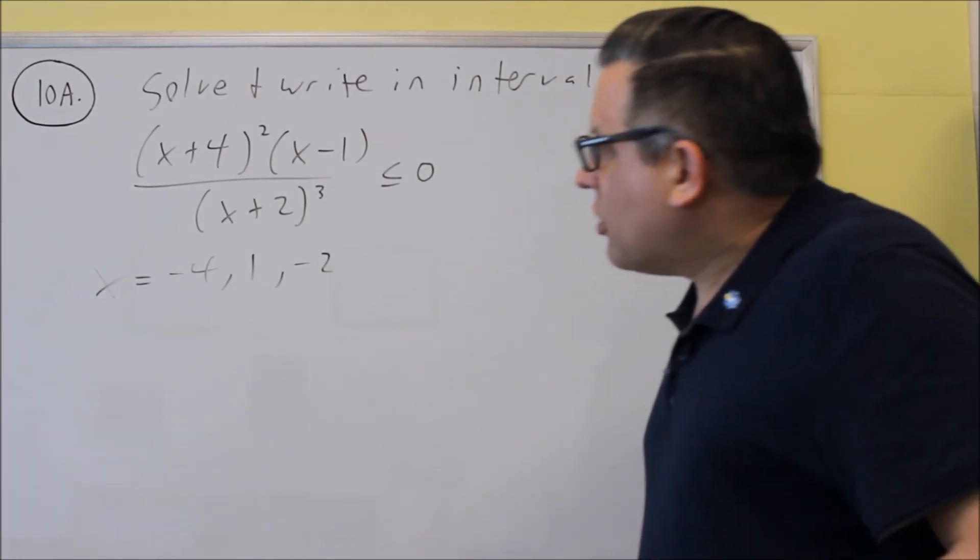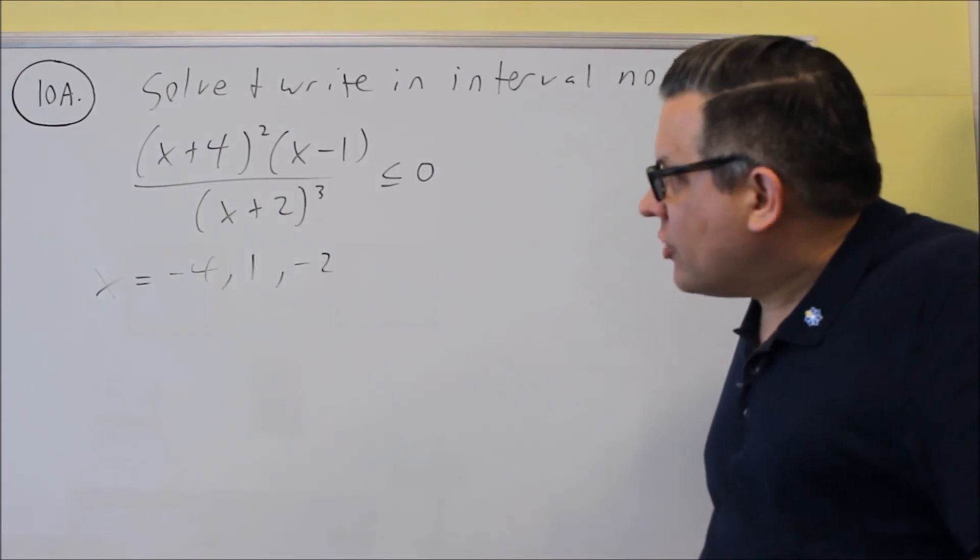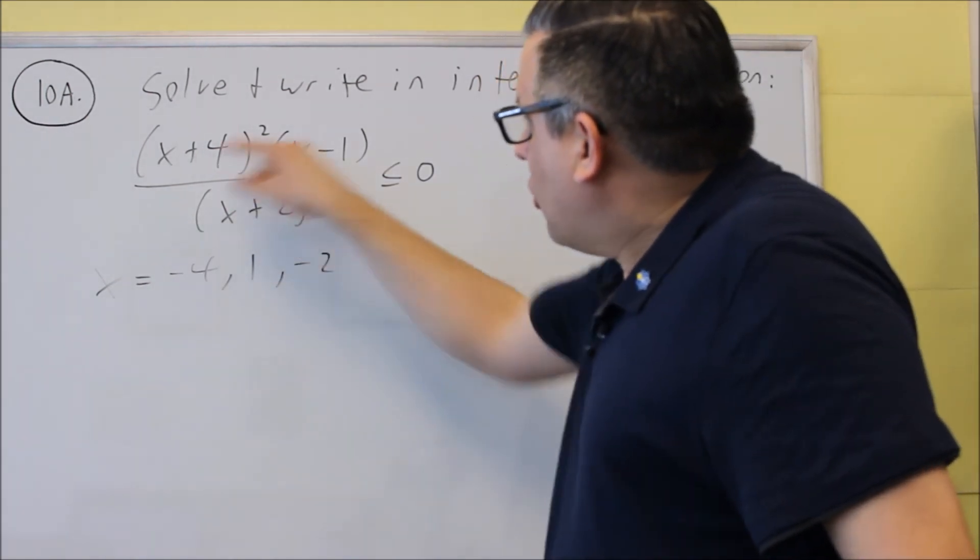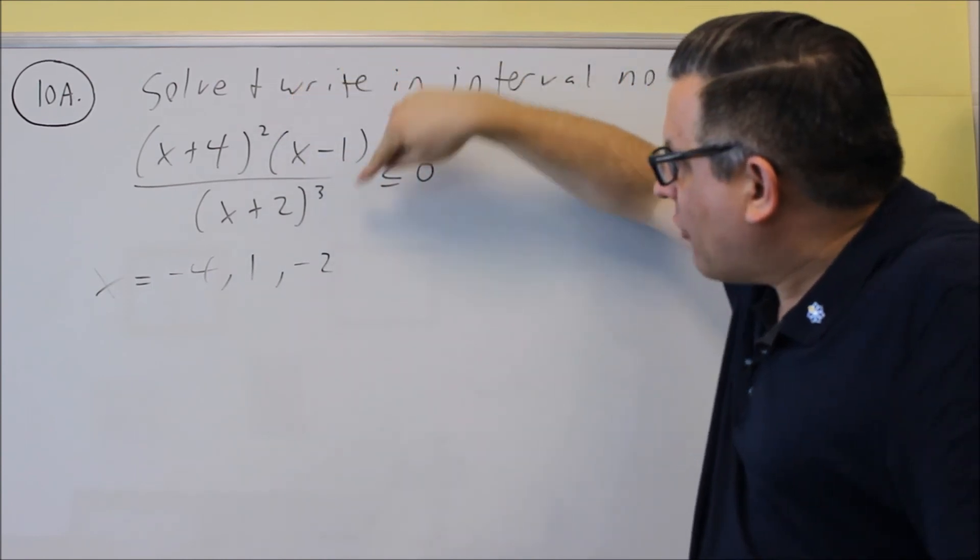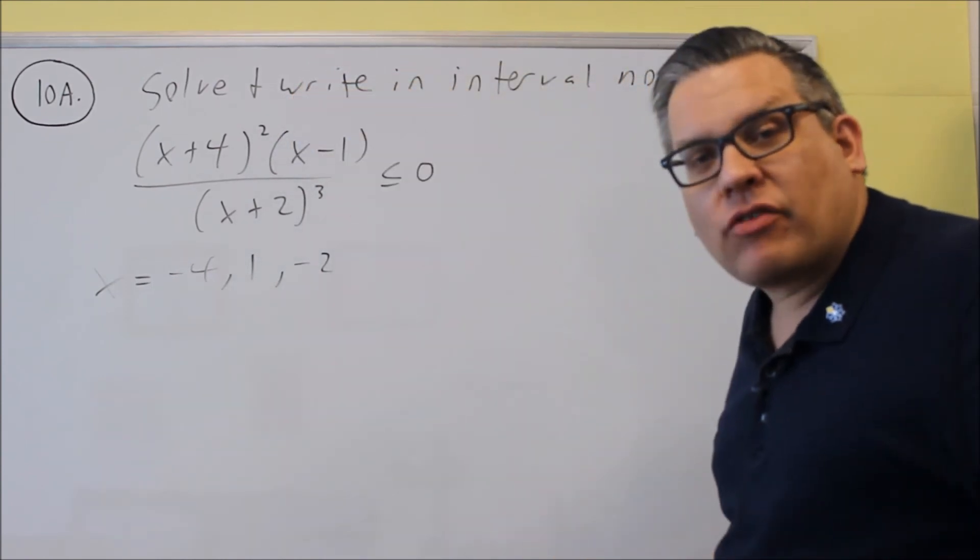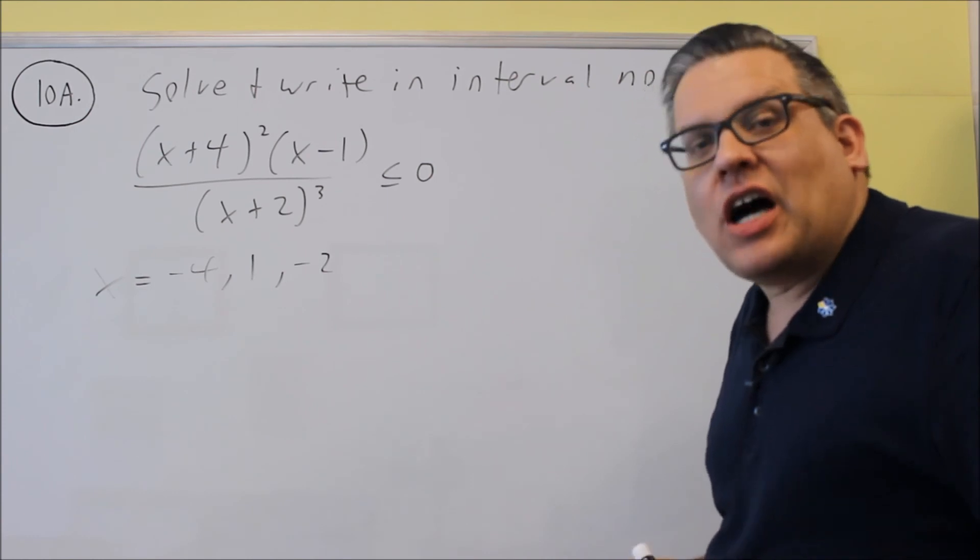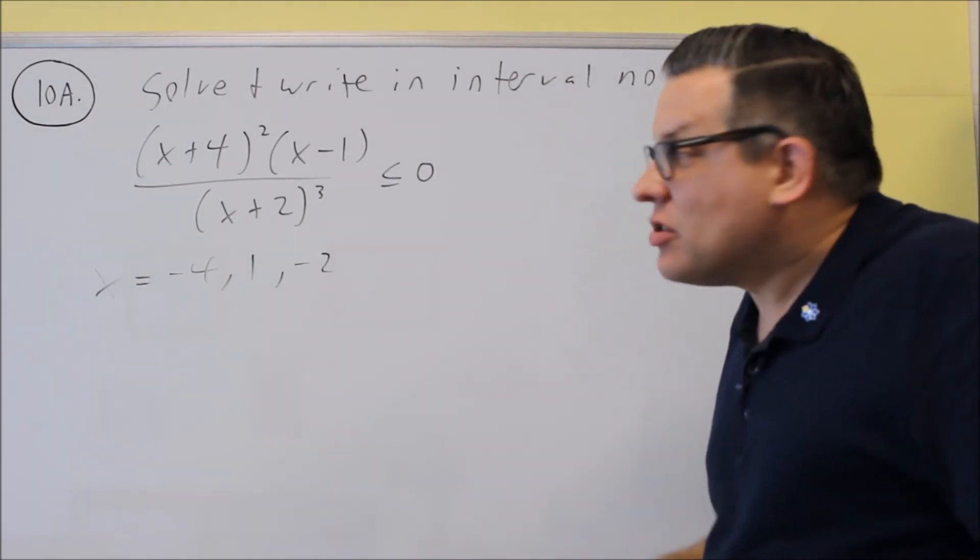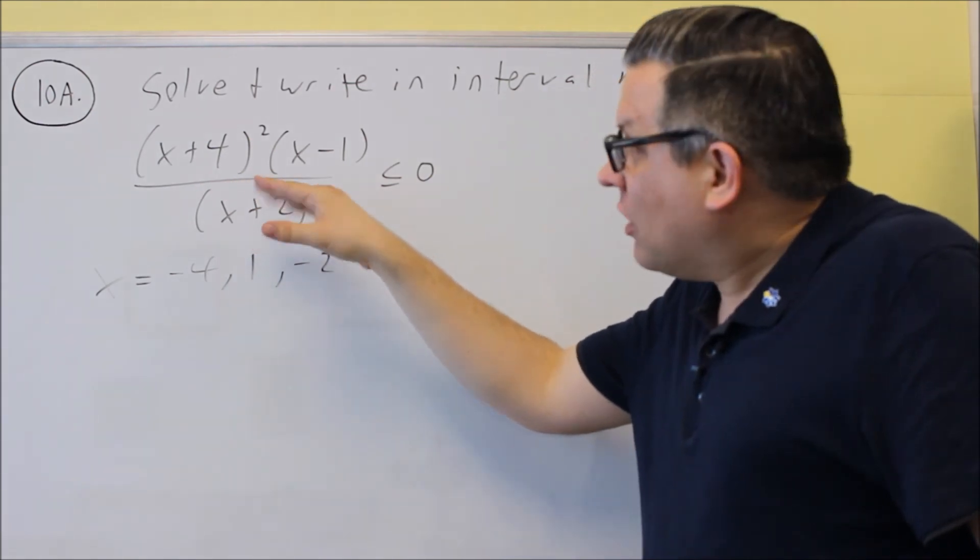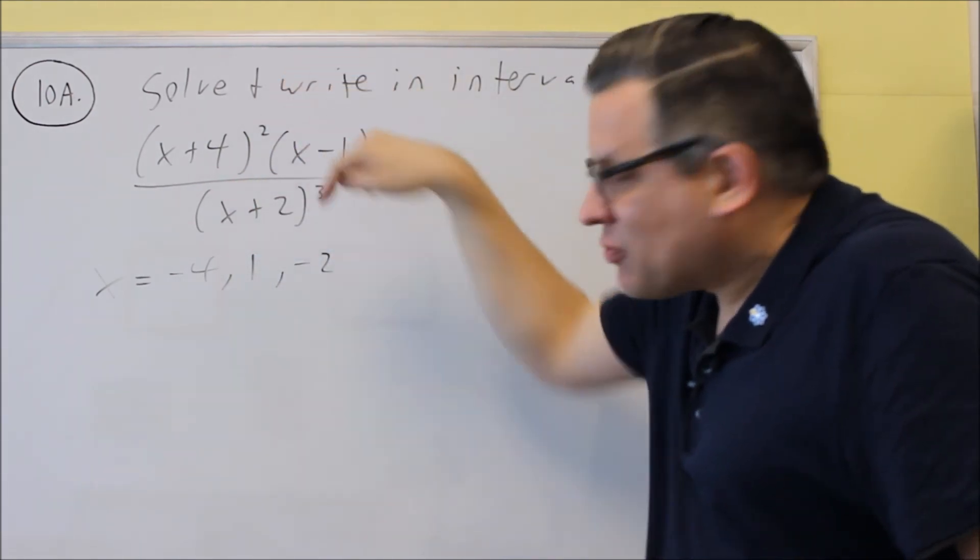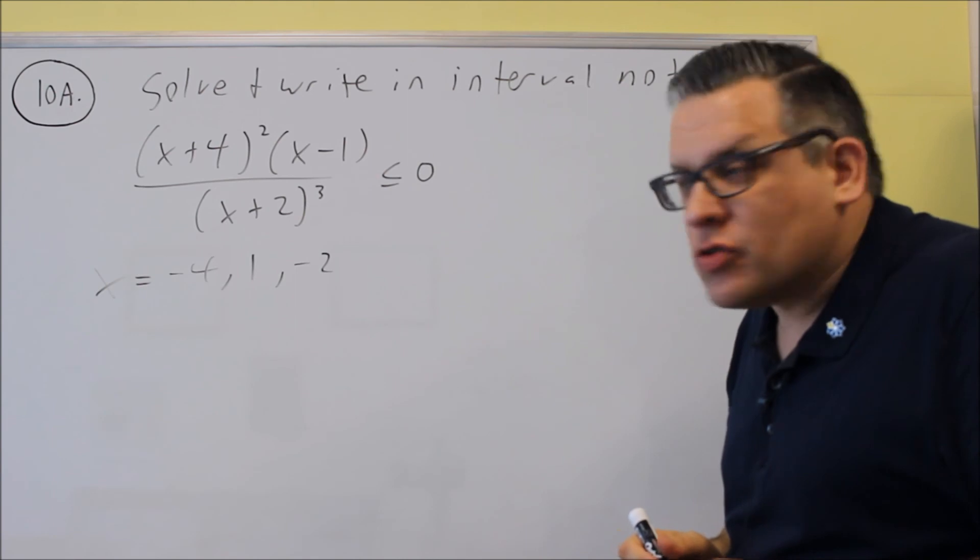So if you're going to do the table method, what you want to do is you're going to create a table with these factors in one of the columns. And any kind of powers that you have associated with these, you have to also include those on the table. That's probably the biggest mistake I see is when students put these down on the table, they don't include these powers. You must include that if you're going to use the table method.